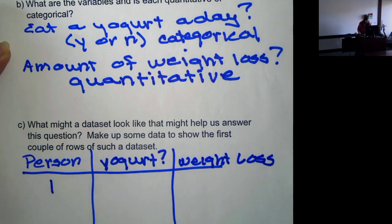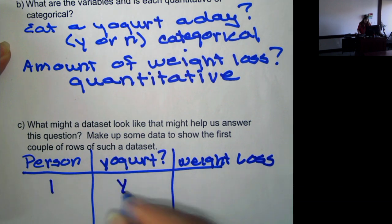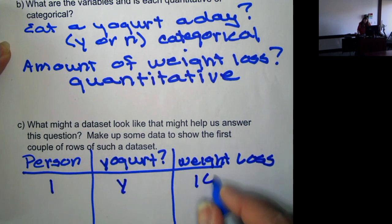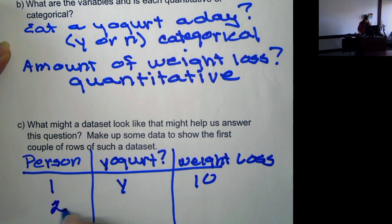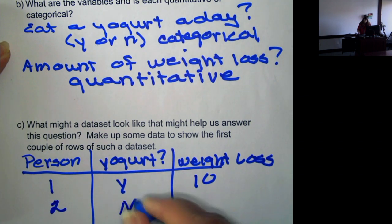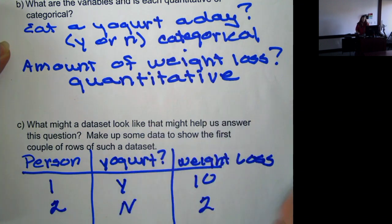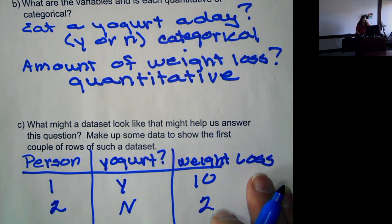So we have person number one - they said yes they did eat yogurt, and they lost ten pounds. Person number two did not eat yogurt, they only lost two pounds. And we would just continue in a like fashion for coming up with our dataset.